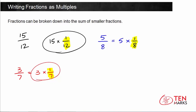When you want to write a fraction as a multiplication sentence, find the unit fraction, which is basically the denominator with a numerator of 1. How many pieces are there? Each piece is 1 twelfth, or each piece is 1 eighth. There are 5 one-eighth pieces, and 5 comes from the numerator. We had 15 one-twelfth pieces — 15 came from the numerator — and we determined the unit fraction from the denominator. Down here, we had 3 one-seventh pieces.